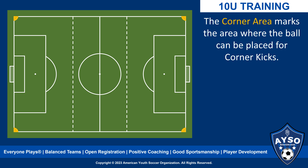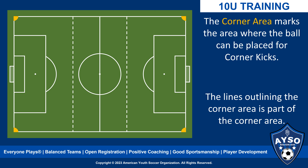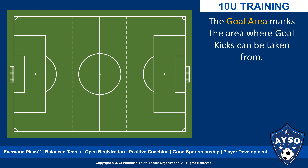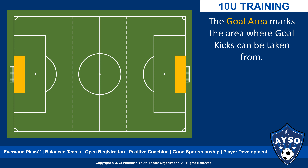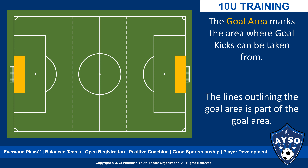The corner area is where the ball can be placed for corner kicks. The lines marking the corner area are part of the corner area. The goal area is where the ball can be placed during goal kicks, and the lines outlining the goal area are part of the goal area.